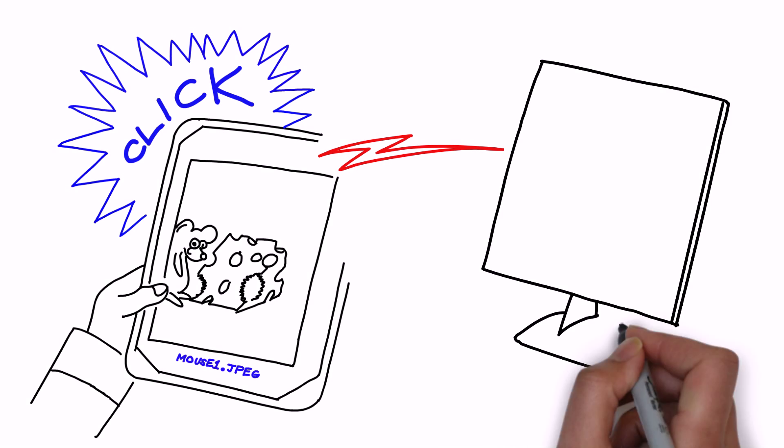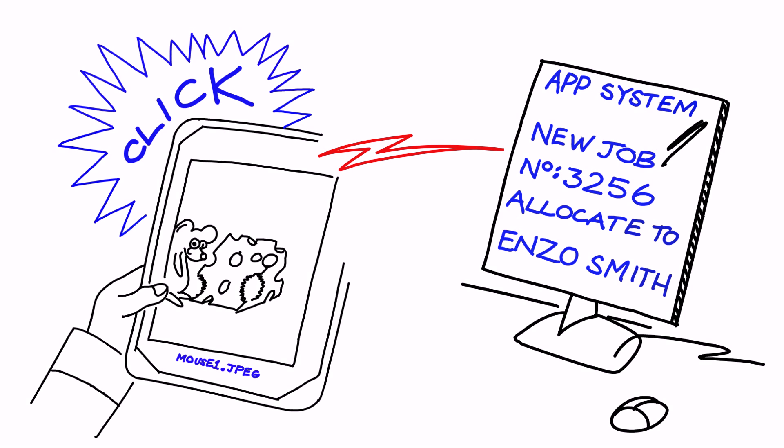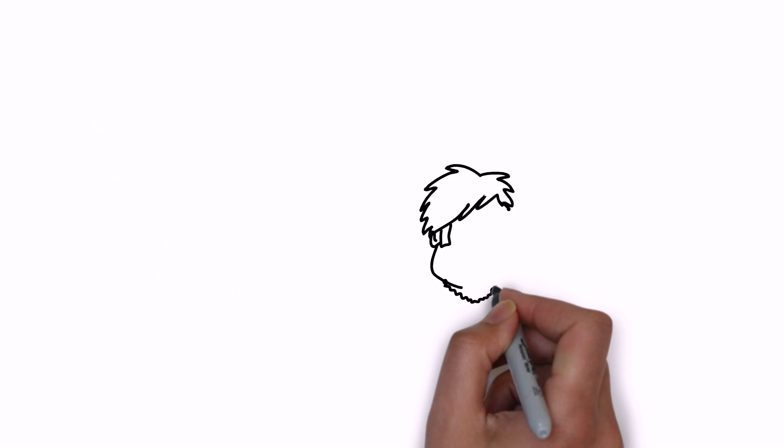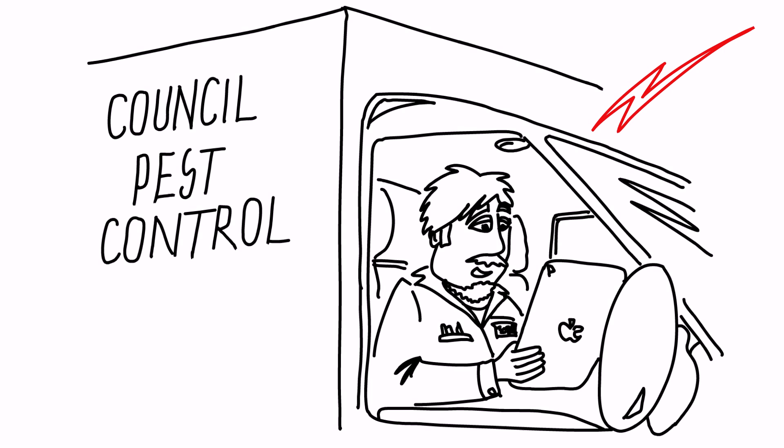The job arrives in the APP back-office and is automatically allocated to Enzo, the pest control officer for the area. The job is passed straight to AllOnMobile on Enzo's device.